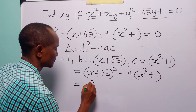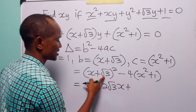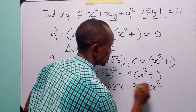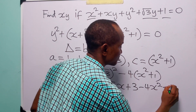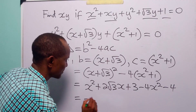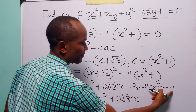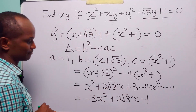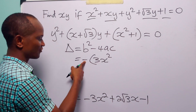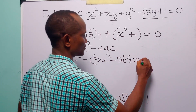Expanding, we have x squared plus 2 root 3x plus 3, then minus 4x squared and minus 4. Combining like terms: x squared minus 4x squared gives minus 3x squared, we have plus 2 root 3x, and 3 minus 4 gives minus 1.